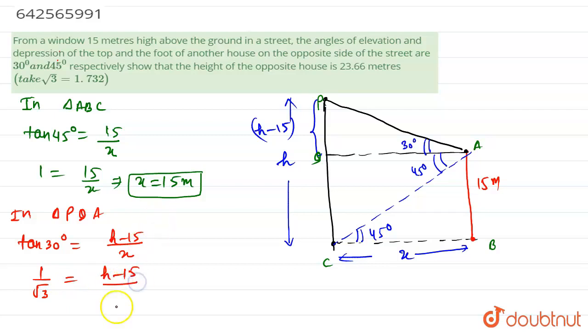The value of x is 15 from equation 1, we can put the value of x. So on cross multiplying, h minus 15 is equal to 15 upon root 3. So h is equal to 15 plus 15 upon root 3. We can clearly say that this value is equal to 23.66 meters.